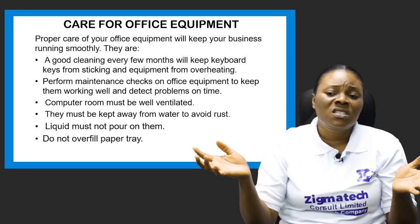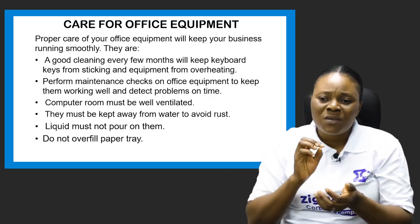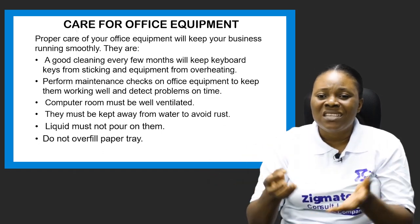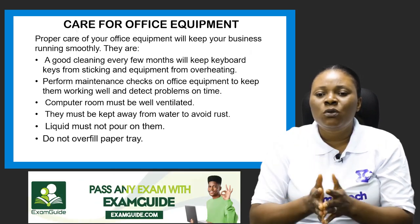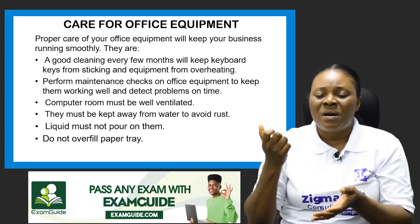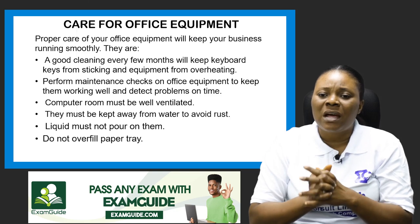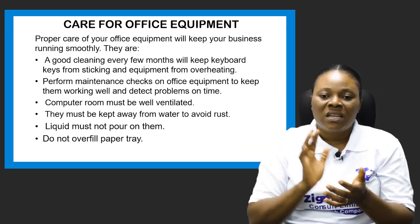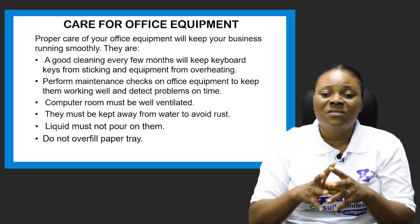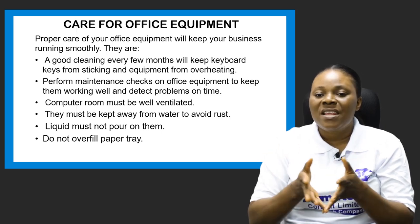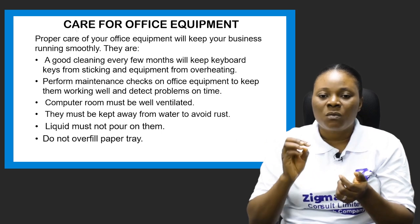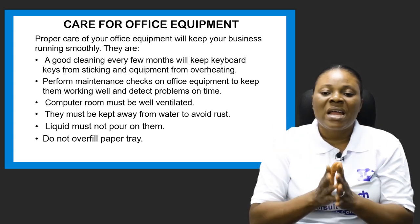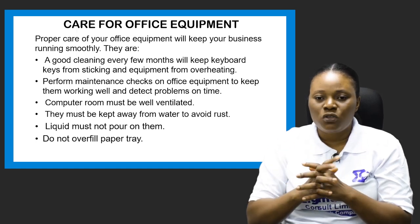Office equipment must be kept away from water to avoid rust. Most of this equipment, if you look at them, is made of metal, and one of the things that can make metallic equipment go bad is constant contact with water. So you should keep your office equipment — your computer systems, perforators, all your machines, both manually and electronically operated — away from water. Similarly, liquid must not be poured on them. Most establishments do not allow you to drink water or any liquid near a computer or any other machine, because once it spills it can completely damage the equipment.